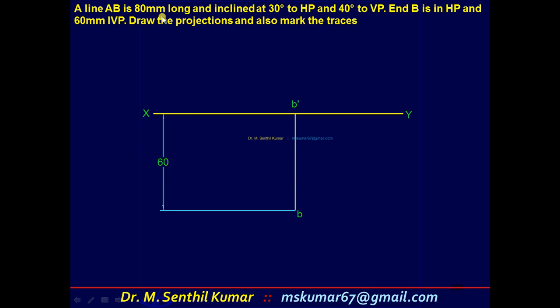This is the problem. See how many data are given to you: 80, 30, 40. End B is in HP, which means 0, and 60 in front of VP.